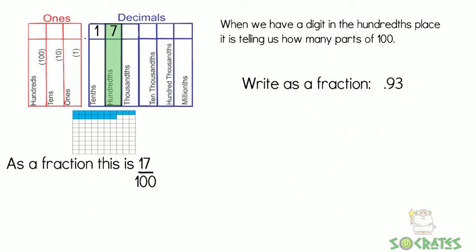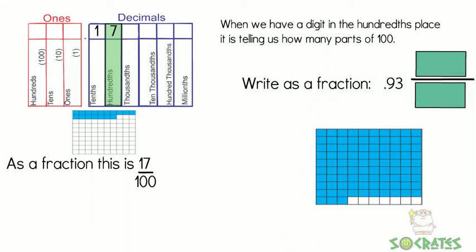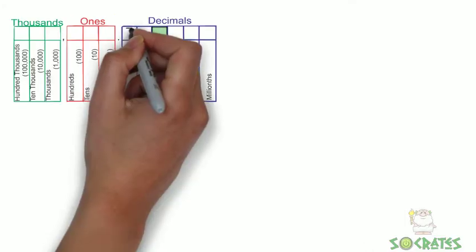Write as a fraction 0.93. So again, it's out of 100, and we're going to have 93 of 100.